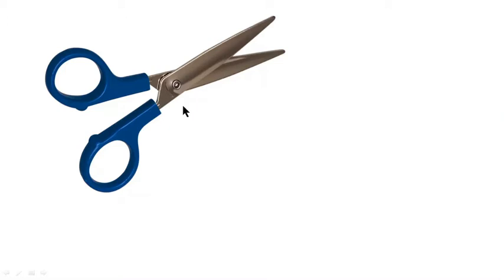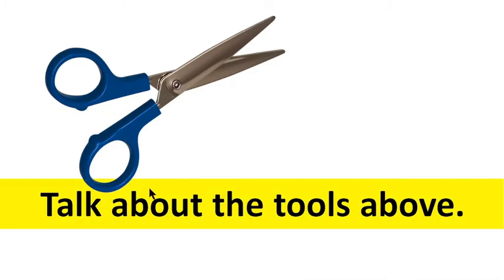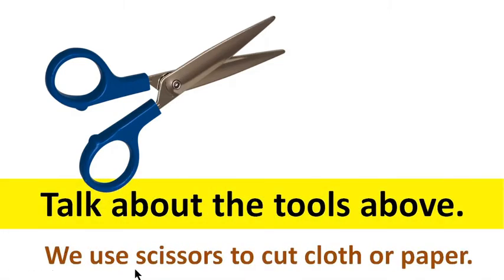This is scissors. Scissors is made of iron and plastic, or steel and plastic. We use scissors to cut cloth or paper.